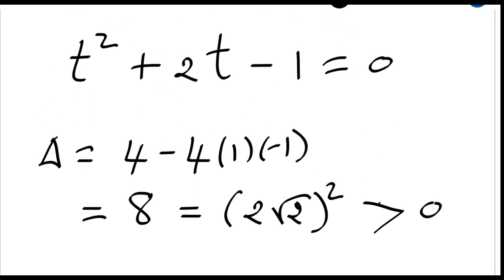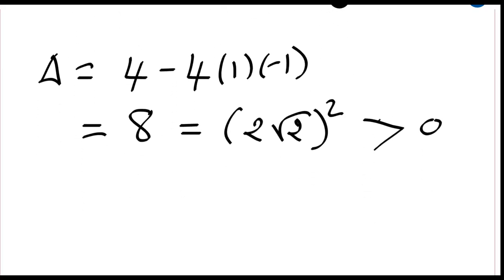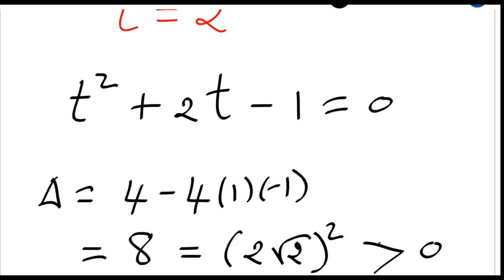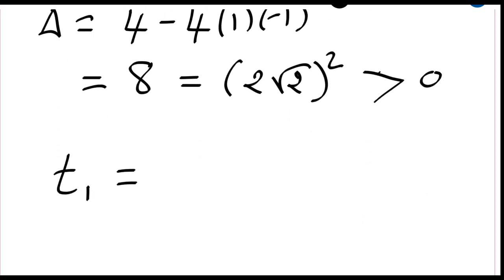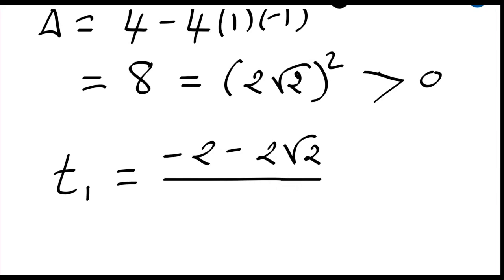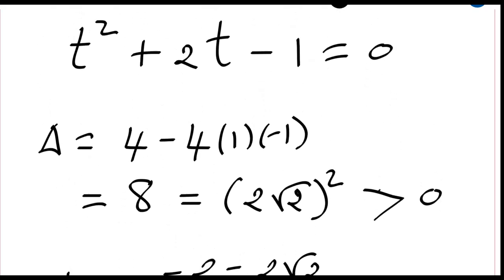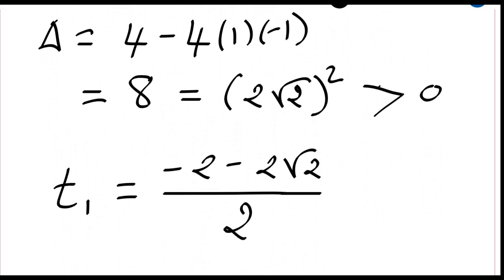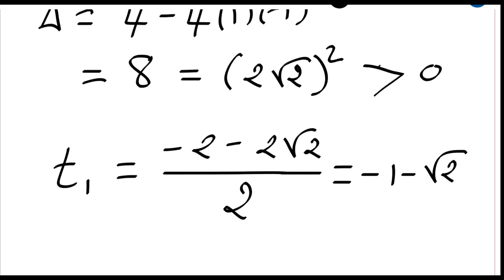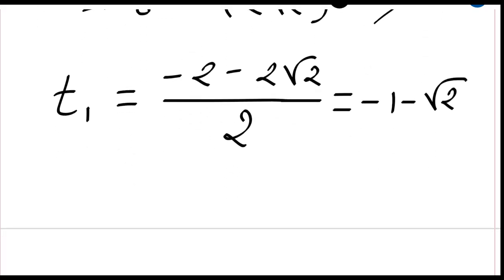The first solution is t₁, which is minus b — minus 2 — minus 2 times the square root of 2, divided by 2a. So this simplifies to minus 1 minus the square root of 2.